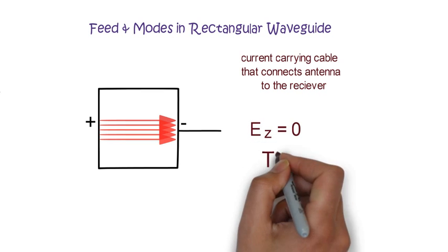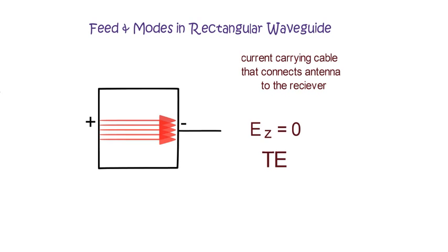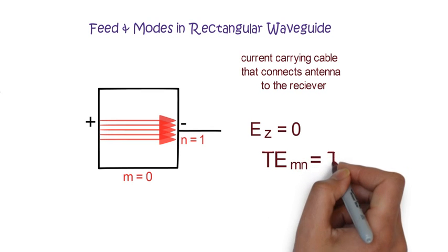So this is transverse electric mode. The number of feed points in horizontal and vertical direction determines the values of integer m and n and hence determines the specific mode.